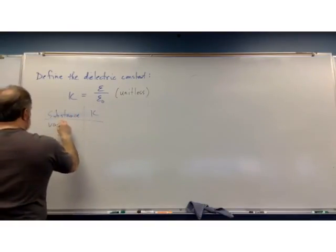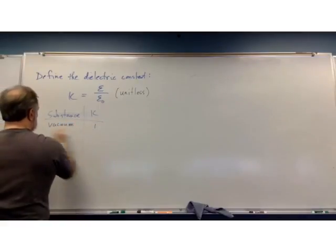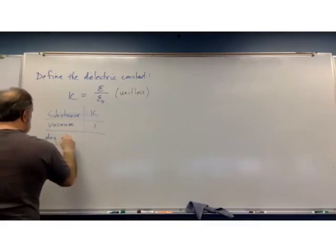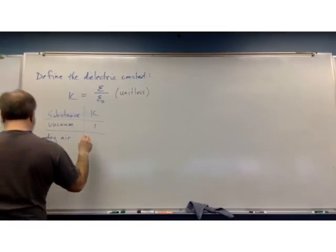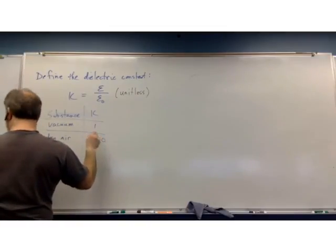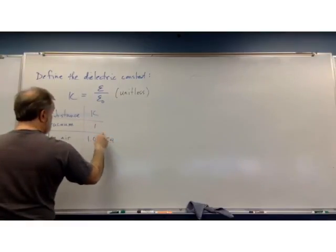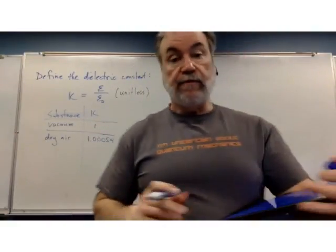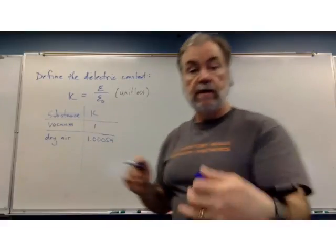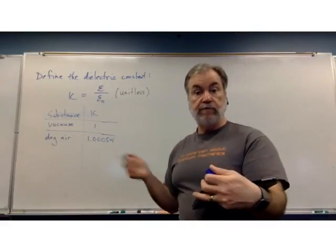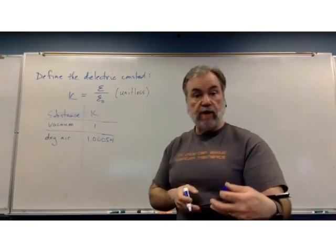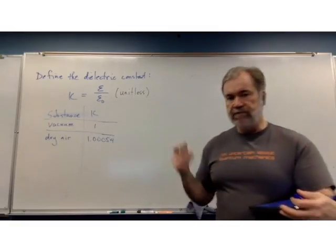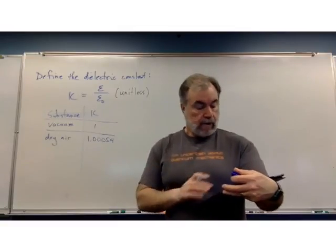Okay. So, vacuum is, by definition, one. And what else do I have? I have dry air. And that's pretty close. One, two, three. Yeah. That's pretty close to vacuum. You can hardly tell difference in the capacitor if there's air between the capacitor plates versus whether there's vacuum. Which is good. That means we don't have to try to worry about having every one of our capacitors vacuum sealed. If you have air in between the plates, that essentially doesn't matter. Okay.